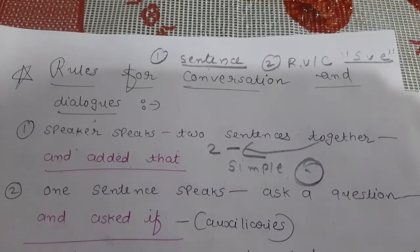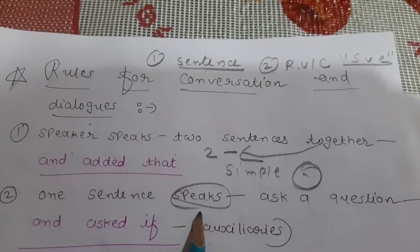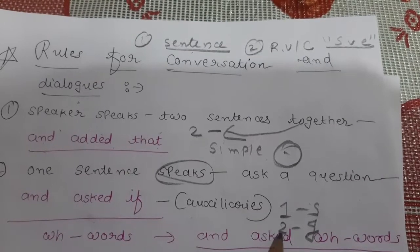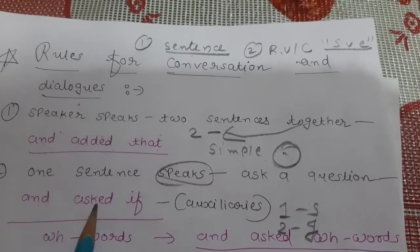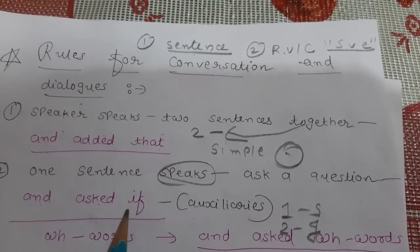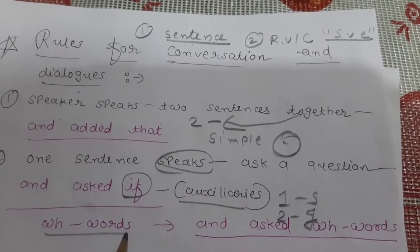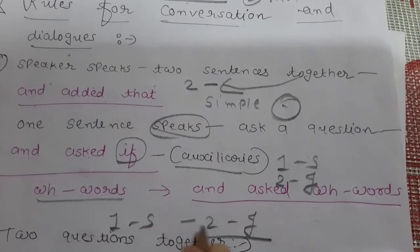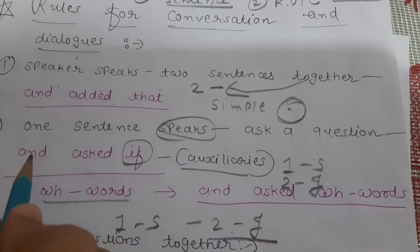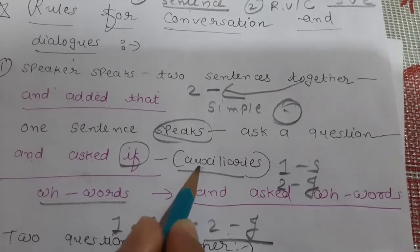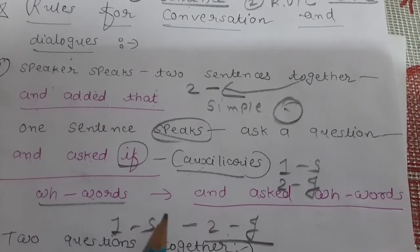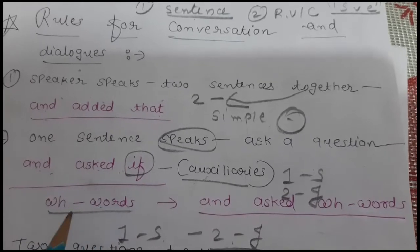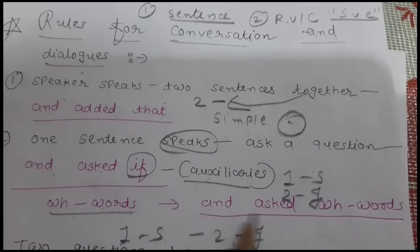Second rule: if the speaker speaks one simple sentence and then asks a question, write the first according to the rule. To join the second interrogative sentence, write 'and asked if' — 'if' when there is an auxiliary like do, does, did, have, has, had. If there is a wh-word, write 'and asked' plus the wh-word as conjunction.